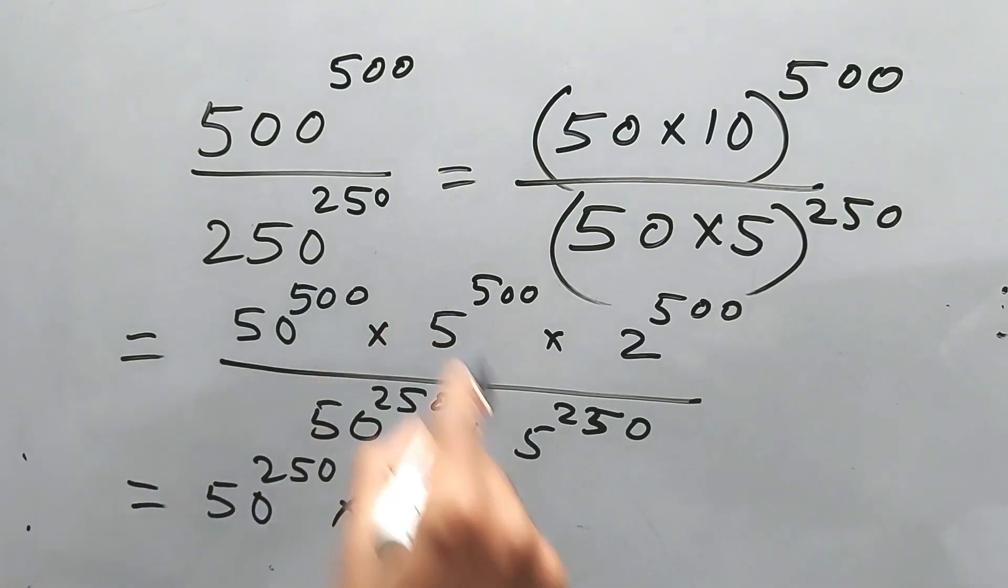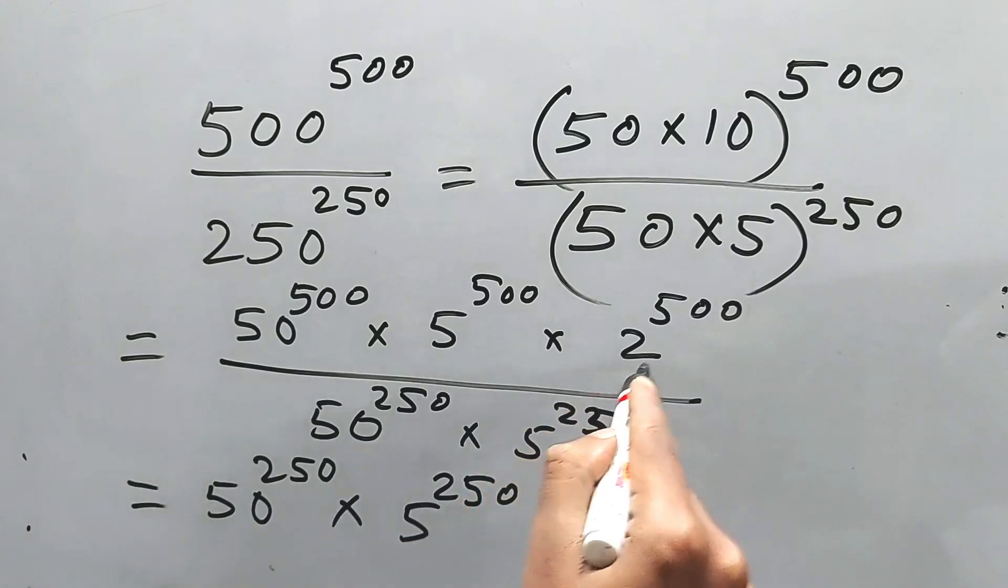Now again in case of 5 also, power will be reduced. So 5 to the power 250, and this 2 to the power 500 will remain the same.